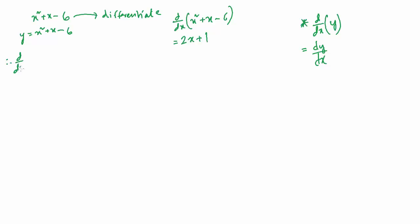So d by dx of y on one side equals to d by dx of x squared plus x minus 6 on the other side.